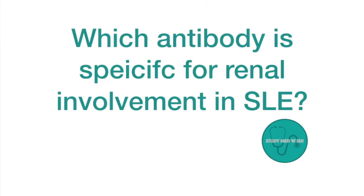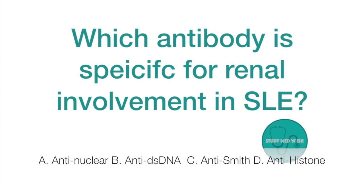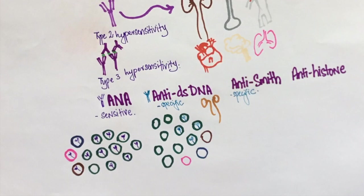Which antibody is specific for renal involvement in SLE? Option A anti-nuclear antibody, option B anti-dsDNA antibody, option C anti-Smith antibody, option D anti-histone antibody. The correct answer is anti-dsDNA antibody.